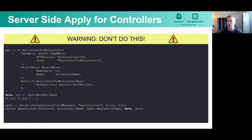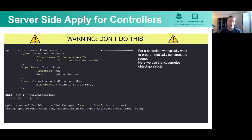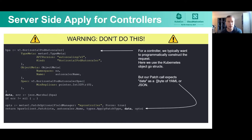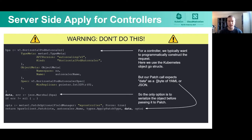With that warning out of the way, what we're going to try and do is programmatically create an apply request. The obvious way to do that — when we do create and update, the first thing we do is use the Go structs to construct the request we want to send to the server. So we can do that for apply. We're going to create a request that just sets the min replicas value to zero. All the other fields are just the coordinates of the object we're changing. Next, we call patch with the type set to apply, and that takes the data as a byte array of YAML, so we have to do some conversion. And that's it — we've constructed and sent an apply request to the server.